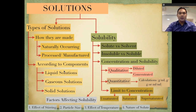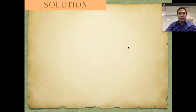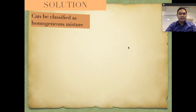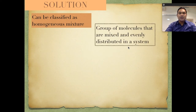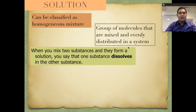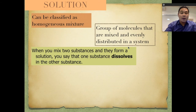We will also be discussing solute versus solvent. So what is a solution? Solution can be classified as a homogeneous mixture. It is also defined as a group of molecules that are mixed and evenly distributed in a system. When you mix two substances and they form a solution, you say that one substance dissolves in the other substance.